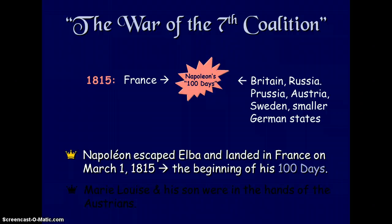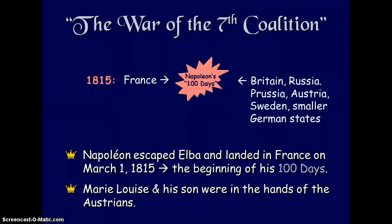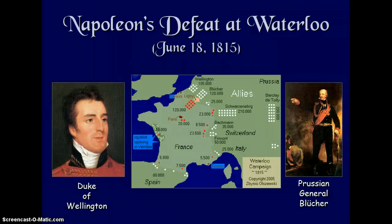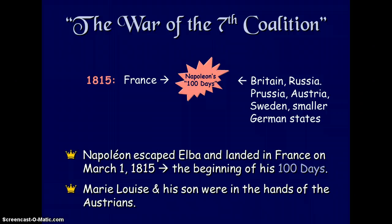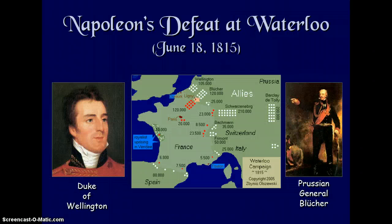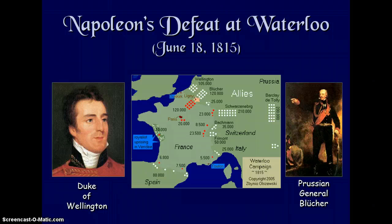During the Hundred Days, Napoleon escaped Elba and landed in France on March 1st, 1815. His wife Marie Louise and his son were in the hands of the Austrians. Napoleon was ultimately defeated at the Battle of Waterloo in 1815, which led to his abdication once again.